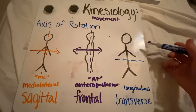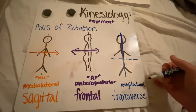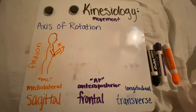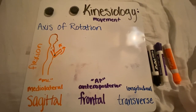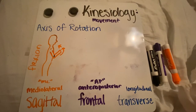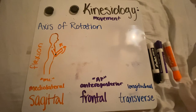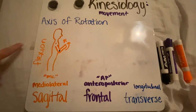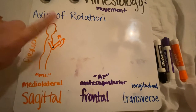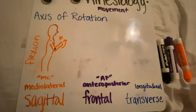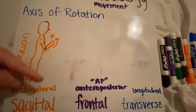The transverse plane cuts the body top from bottom, and perpendicular to this plane is a line called the longitudinal axis. When we talk about movements in the sagittal plane — which runs frontwards to backwards — flexion and extension occur there. For flexion of the elbow, the axis of rotation goes straight through the joint, and flexion occurs in the sagittal plane at the elbow.